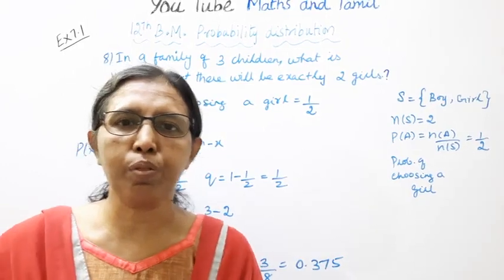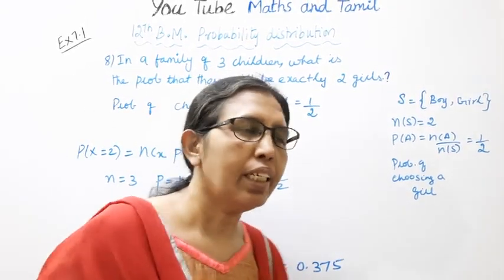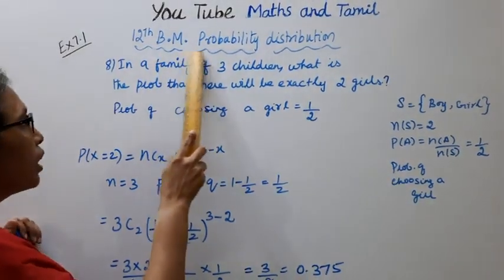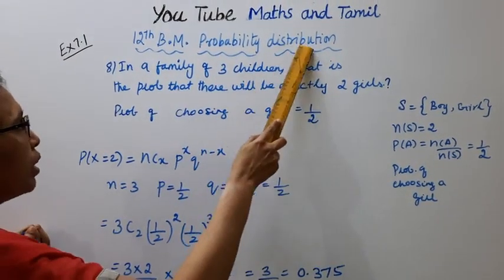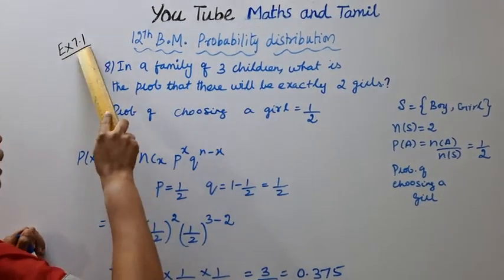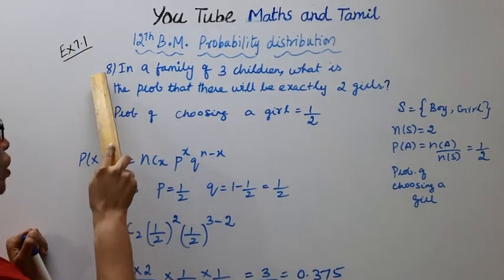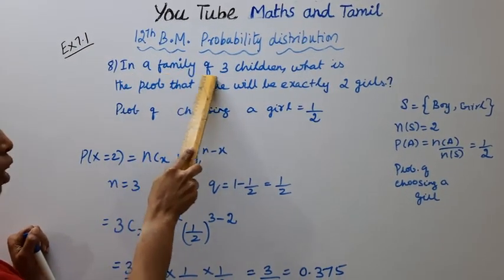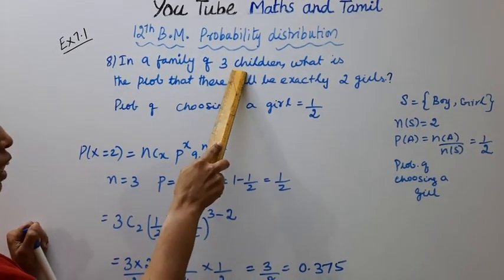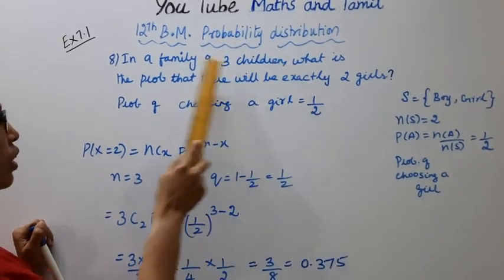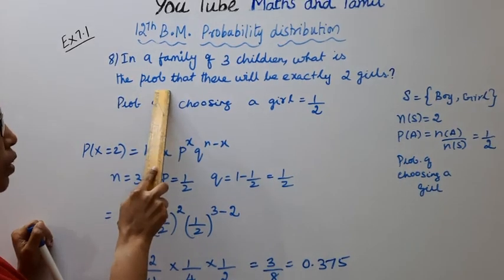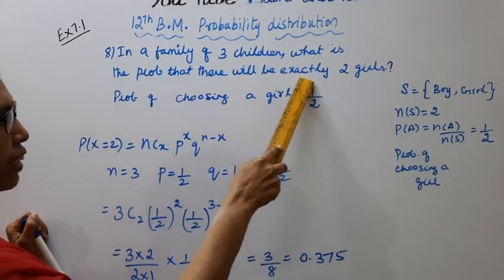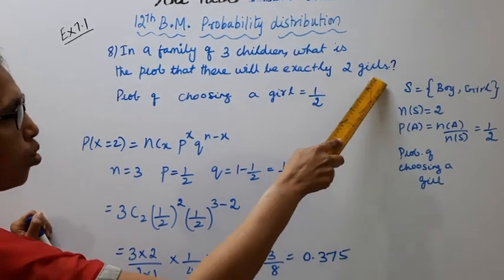Hello students, welcome to Max and Tamil channel. 12th standard business maths, probability distribution, exercise 7.18 sum. In a family of 3 children, what is the probability that there will be exactly 2 girls?